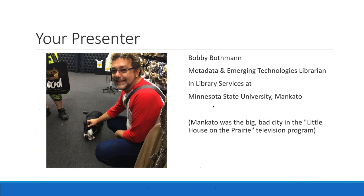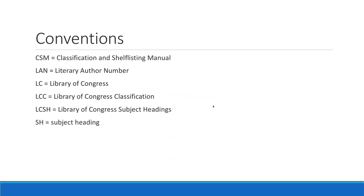Mankato was the big bad city in the Little House on the Prairie television program, so most people recognize it. Some conventions for today: CSM refers to the Classification and Shelf Listing Manual — the how-to manual for Library of Congress Classification. LAN is the literary author number, used when constructing or using numbers for literature. LC is Library of Congress, LCC is Library of Congress Classification, LCSH is Library of Congress Subject Headings, and SH may be used as a shortened form of subject heading.